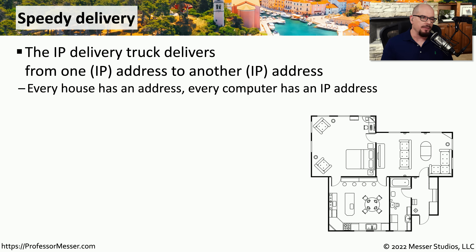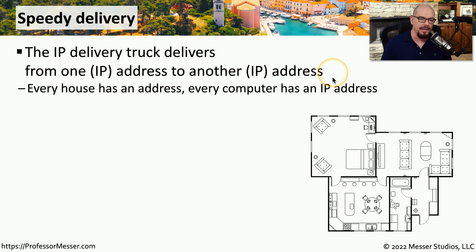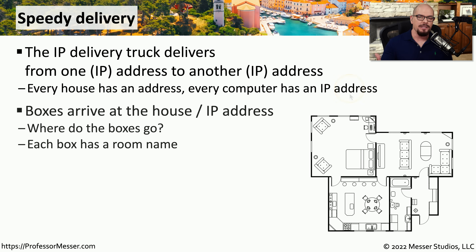In our moving truck metaphor, we have our IP delivery truck moving information from one IP address to another. Just as every house on your block has a unique mailing address, every computer inside your network has a unique IP address. Once that box is received at the destination IP address, there is more information that needs to be examined on the label to determine where that box is to go inside of the house.